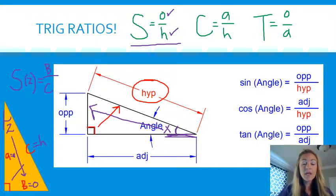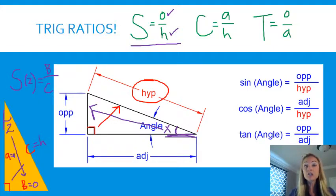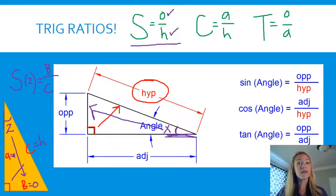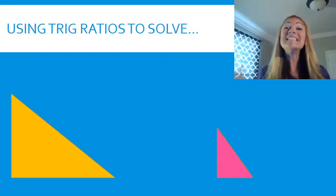The sine of angle Z equals the opposite — which is B — over the hypotenuse — which is C. Right now we don't have numbers, so we're not solving yet, but it's most important that you're able to identify the pieces of a right triangle so we can apply that to solving for sides or angles. Make sure you can identify all three parts.